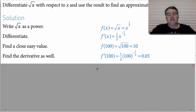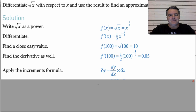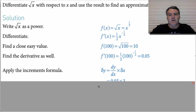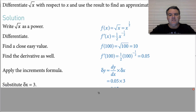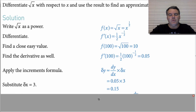So the derivative at x equals 100 is ½x^(-½), so ½ times 1 over 10, which gives us 0.05. So using the increments formula now, dy/dx at x equals 100 is 0.05, and the change in x is 3 — we've gone from 100 to 103. So that gives us 0.15.